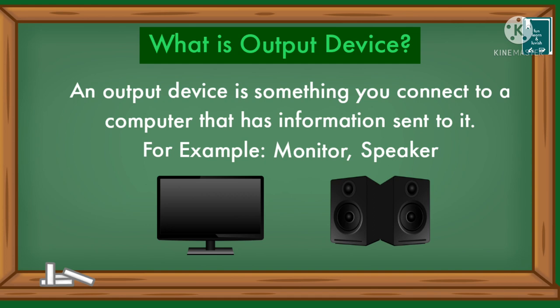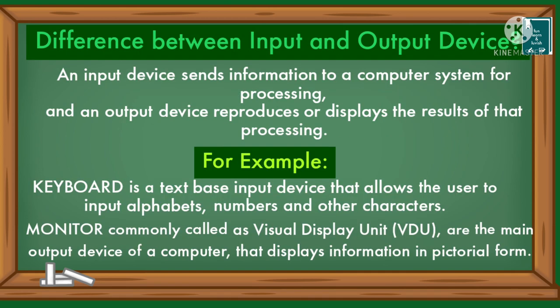An output device is something you connect to a computer that has information sent to it. Example: monitor and speaker. The difference between input and output device: an input device sends information to a computer system for processing, and an output device reproduces or displays the result of that processing. For example, a keyboard is a text-based input device that allows the user to input alphabets, numbers, and other characters.